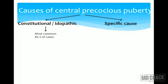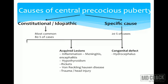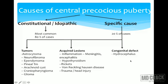Causes of central precocious puberty: 80% are idiopathic (constitutional). Specific causes account for only 20% and include congenital defects such as hydrocephalus, acquired lesions like meningitis, encephalitis, hypothyroidism, head trauma, and tumors such as astrocytoma and neurofibroma.